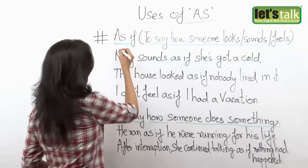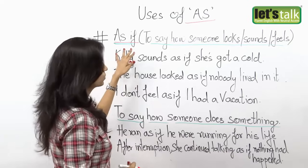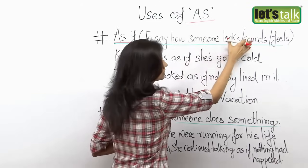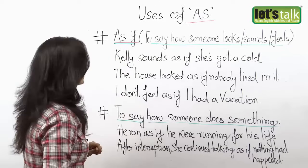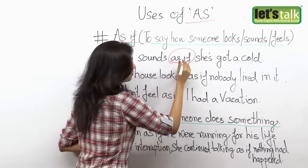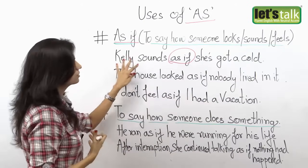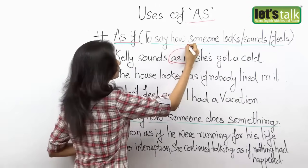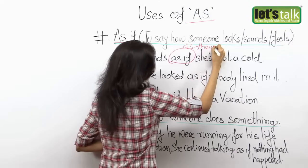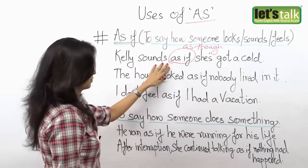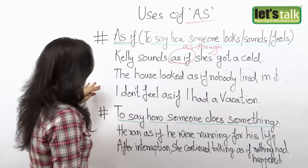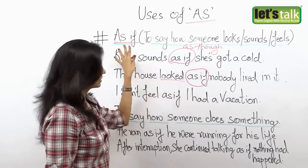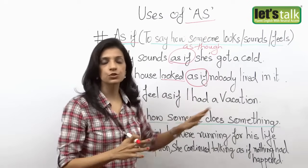Now let's take a look at how we use 'as if'. We use 'as if' when you want to say how someone looks, sounds, or feels. For example: 'Kelly sounds as if she's got a cold.' You can also use 'as though' in place of 'as if'. Another example: 'The house looked as if nobody lived in it' — showing the house is empty as though no one lived in it.